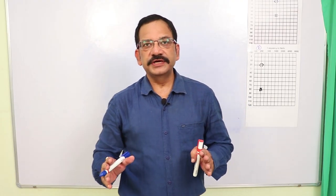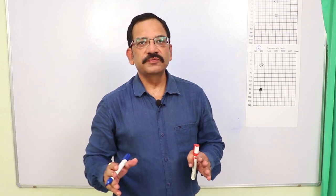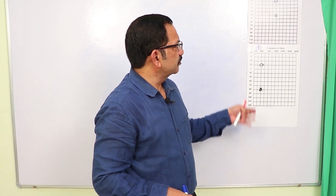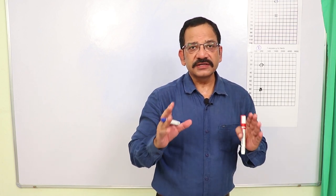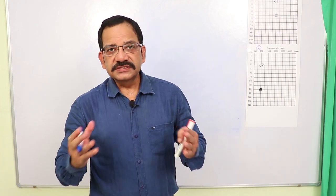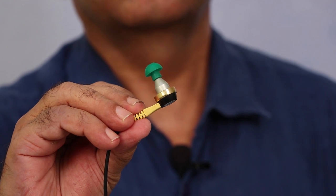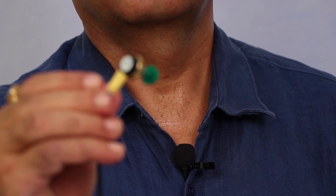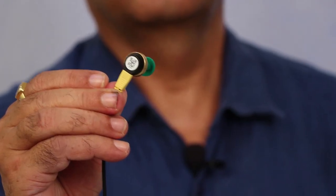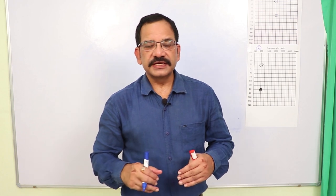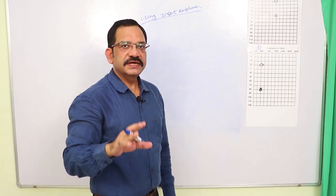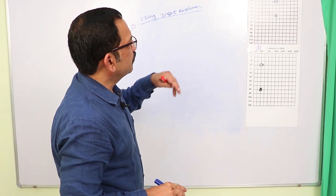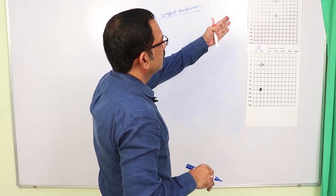Logically, we need to increase the inter-aural attenuation so that masking will be a possibility in these types of audiograms. Once you are confronted with such audiograms, you can use insert earphones. With insert earphones or insert receivers, the area of contact is smaller with the skull and therefore the inter-aural attenuation increases — up to 50 dB to 90 dB. We take the worst case and consider that while using insert earphones, the inter-aural attenuation is 50 dB. So let us calculate the minimum and maximum masking levels in audiogram number 1 using insert earphones.